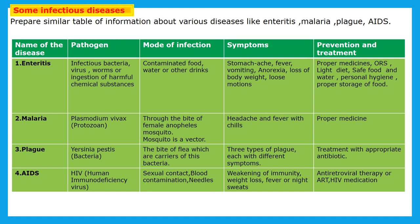The next disease is AIDS. This is caused through virus — HIV, Human Immunodeficiency Virus. Mode of infection is through sexual contact, blood contamination, and contaminated needles. Symptoms include weakening of immunity, weight loss, fever, and night sweats. Prevention and treatment for AIDS is anti-retroviral therapy (ART) and HIV medication from a doctor.